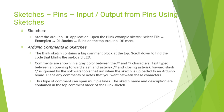Start the Arduino IDE application, open the Blink Example Sketch, then go to File, then Example and Basic, then go to Blink on the top of Arduino IDE menu. The Blink Sketch contains a big command block at the top. Scroll down to find the code that blinks the onboard LED. Commands are shown in gray color between slash-star and star-slash characters. Text placed between an opening forward slash asterisk and closing asterisk forward slash is ignored by the software tools when the sketch is uploaded to an Arduino board. You can place any comments or notes between these characters, and this type of comment can span multiple lines. The sketch name and description are contained in the top comment block of the Blink sketch.